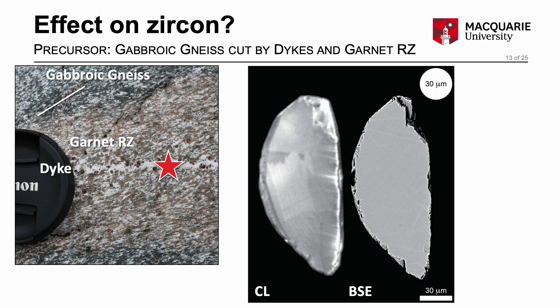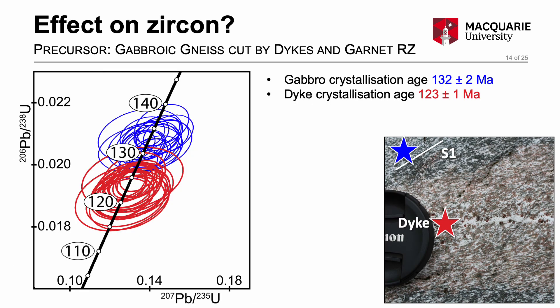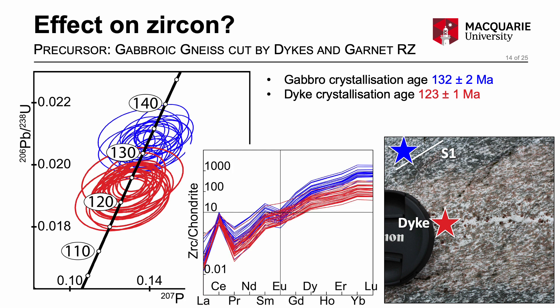Within the dykes, we observe sector zoning and faint oscillatory zoning in cathodoluminescence images of the zircon grains, and those zircon grains are pretty clean in backscattered electron images. Uranium-lead geochronology indicates the dykes cut the gabbroic gneiss at about 123 million years, showing that the precursor rocks to our melphorite high strain zones had a relatively short 10 million year geological history in which to form. Rare earth element patterns of zircon from the dykes are depleted in heavy rare earth elements compared to the host gabbroic gneiss, and there's a lack of a europium anomaly. The reduced heavy rare earth elements is likely due to co-crystallisation of garnet in the dykes, competing for those heavy rare earth elements.